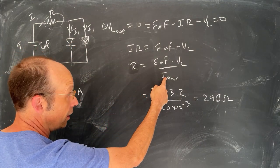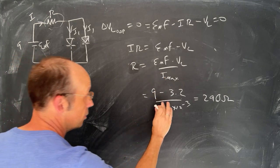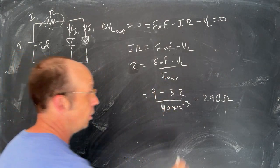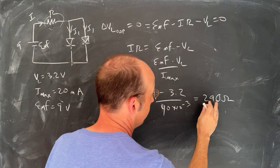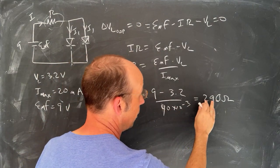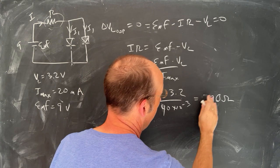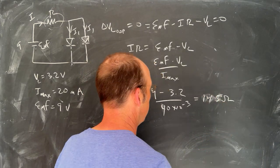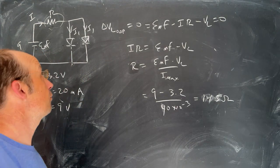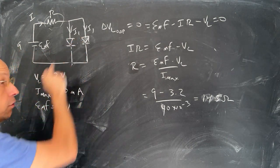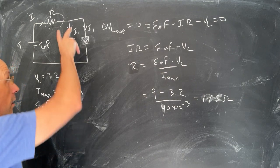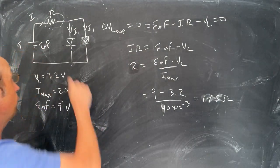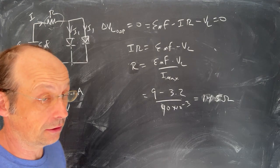So essentially, I max is just going to be twice as much. This is going to be 40 times 10 to the negative 3. So I'm going to have half the resistance needed, so it would be 145. Is that right? 145. So I need a smaller resistor because now I have two LEDs in parallel, and the combination is going to have a larger current draw than just one by itself, so I don't need as large a resistance right there.